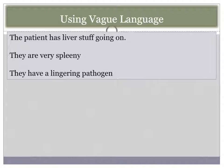Another thing we do when we don't know how to diagnose is use vague language. It's good to notice when you are using vague language about what's going on with your patient and think: does this mean I'm actually not very clear about this? Things like 'the patient has liver stuff going on,' 'they're very spleeny,' 'they have lingering pathogen,' or 'they have kidney stuff with adrenal deficiency' — those kinds of things may indicate that you don't know how to diagnose.